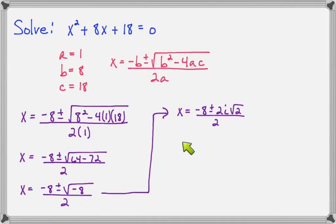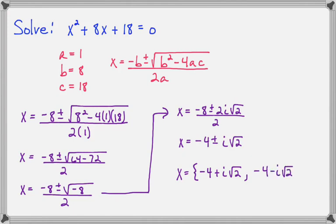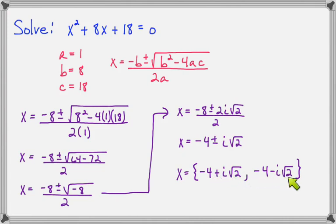The square root of negative 8: since 8 is 4 times 2, the square root of 4 is 2 and the square root of negative 1 is i, leaving 2 still under the radical. So we have negative 8 plus or minus 2i square root of 2, all over 2. Notice that 8, 2, and 2 can all be divided by 2: 8 divided by 2 is 4, and 2i divided by 2 is i. The 2 under the radical doesn't participate in the simplification. The denominator becomes 1, so we don't write it. My two separate answers are negative 4 plus i square root of 2, and negative 4 minus i square root of 2.